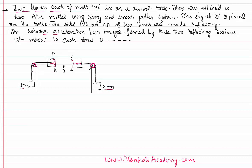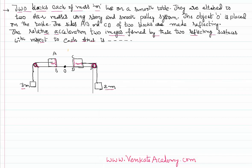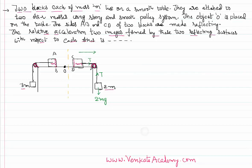We need to calculate the relative acceleration of the two images formed by these two reflecting surfaces. First, let us consider one part — say the CD side — and find the acceleration of that system. Since the two bodies are connected, they are going to have the same acceleration. I shall identify the forces acting on the bodies: 2mg acts in the downward direction.